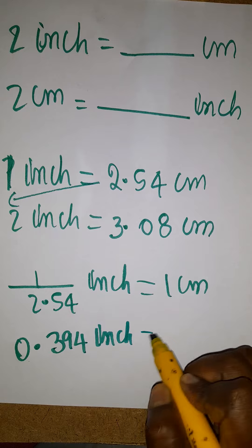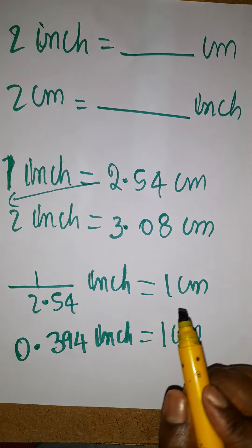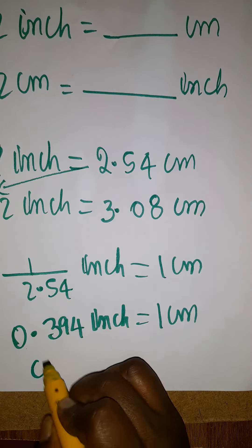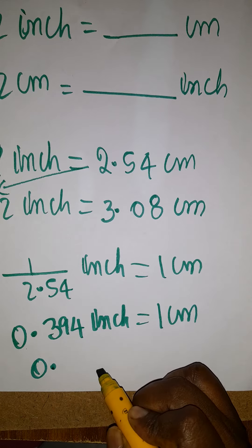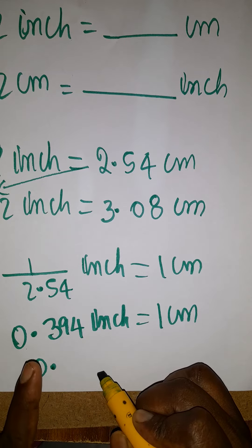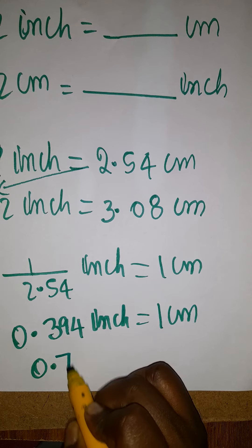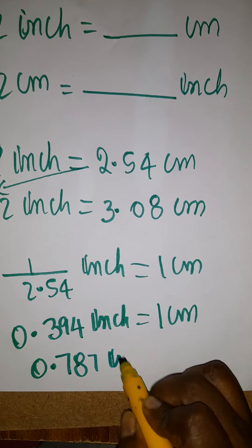Actually I asked 2 centimeters how many inches, so multiplication of 2. It is a very simple multiplication, two times you should multiply this. It's going to be 0.787 inches equals 2 centimeters.